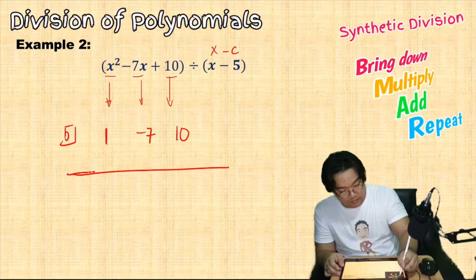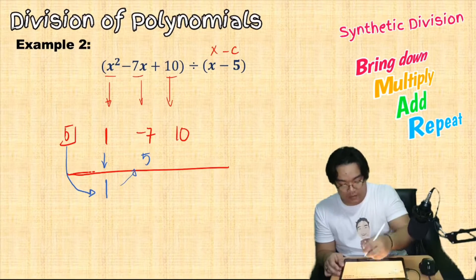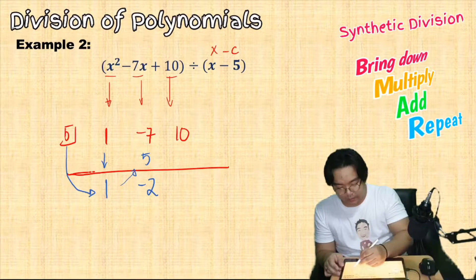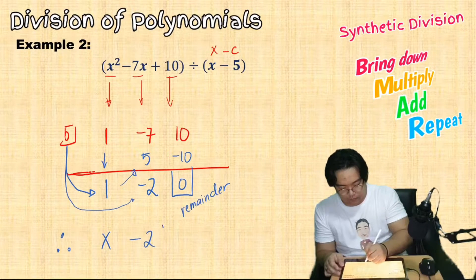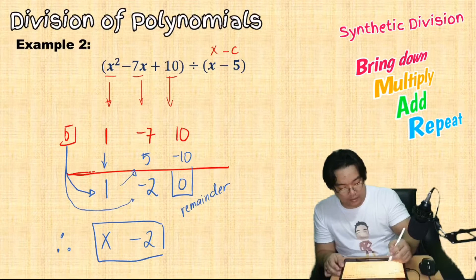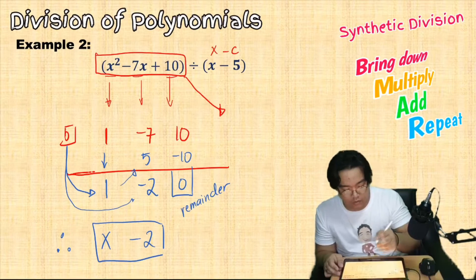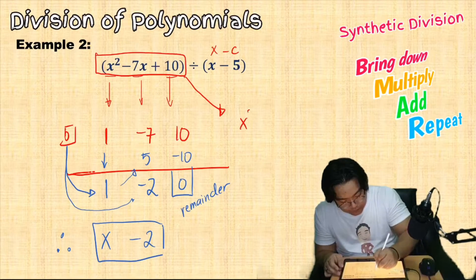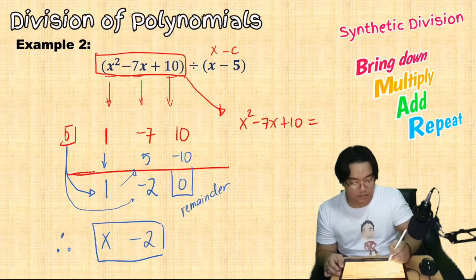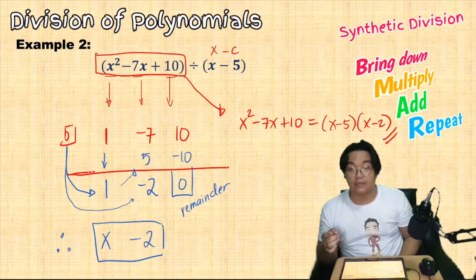Bring down 1, multiply 5 times 1 to get 5, add negative 7 plus 5 to get negative 2, repeat: 5 times negative 2 is negative 10, and negative 10 plus 10 gives remainder 0. The quotient is x minus 2. Therefore x squared minus 7x plus 10 can be written as the product of the divisor and quotient: x minus 5 times x minus 2. This also helps identify if the divisor is a factor of the dividend.